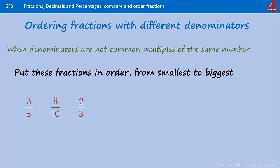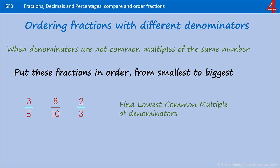It gets a little more tricky when we're comparing more than two fractions. To put these three fractions in order from smallest to biggest — 3 fifths, 8 tenths, and 2 thirds — we need to find the lowest common multiple of those three denominators. We can see that 5 and 10 are both multiples of 5, but 3 isn't. 5 and 10 will both go into 20, but 3 won't.